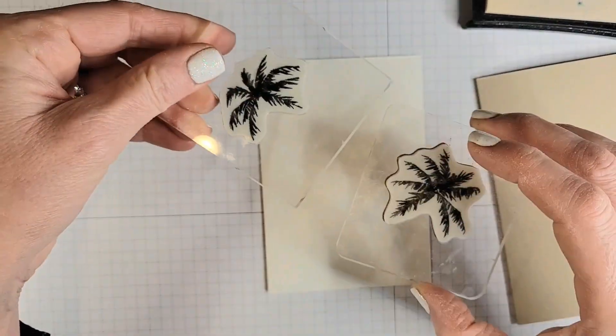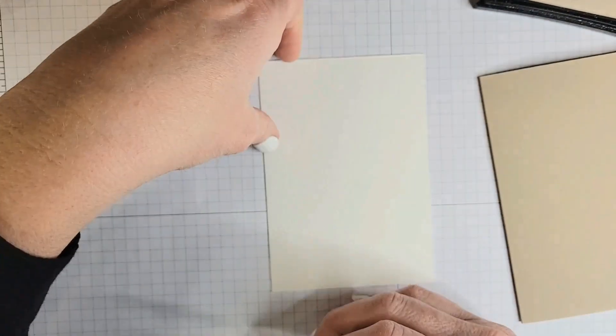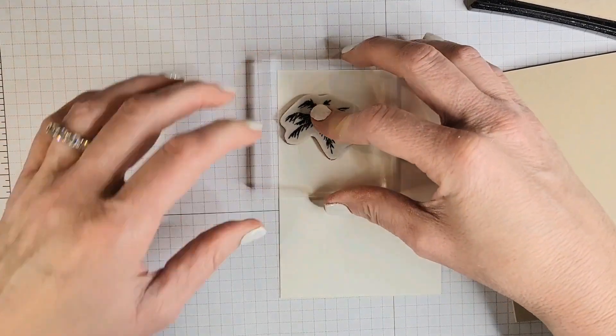They're similar, a little bit different, so we'll use them both, and then we are ready for some embossing powder. You've got to kind of be quick about this so you can get it in the right spot.